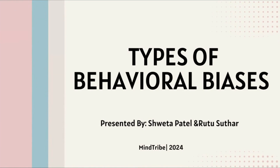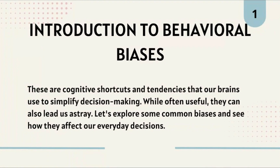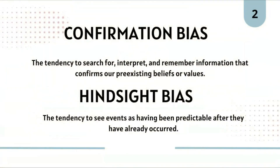Good morning everybody. Today we are going to talk about an interesting topic of behavioral biases with real life examples. I and Ritu will be presenting on the types of behavioral biases. Introduction: these are cognitive shortcuts and tendencies that our brains use to simplify decision making. While often useful, they can also lead us astray. Let's explore some definitions and how they affect our everyday decisions.